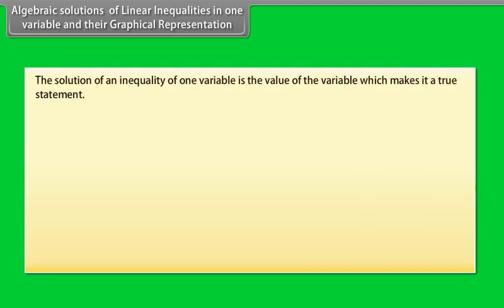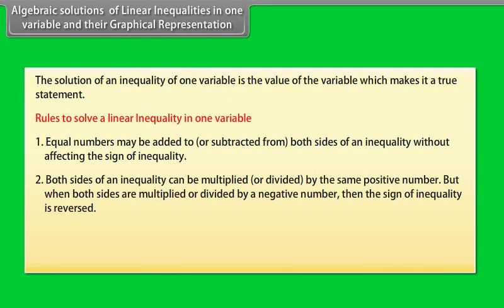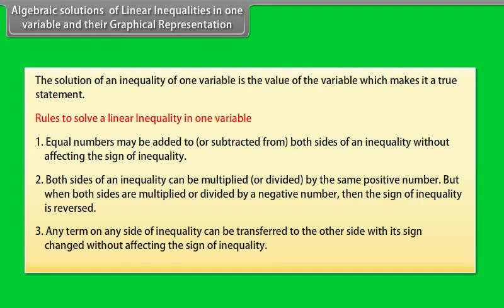Algebraic solution of linear inequalities in one variable and their graphical representation. The solution of an inequality of one variable is the value of the variable which makes it a true statement. Rules: (1) Equal numbers may be added to or subtracted from both sides of an inequality without affecting the sign of inequality. (2) Both sides can be multiplied or divided by the same positive number, but when both sides are multiplied or divided by a negative number, the sign of inequality is reversed. (3) Any term on any side can be transferred to the other side with its sign changed without affecting the sign of inequality.